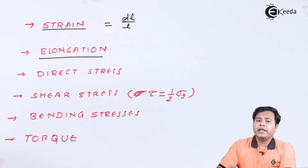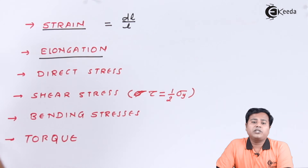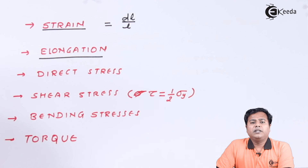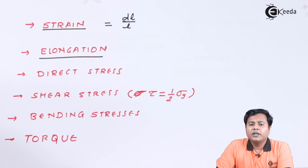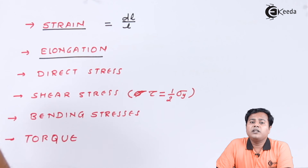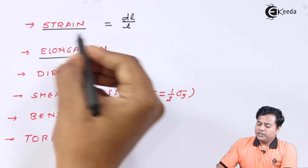The next parameter is elongation, which is the change in length after application of load. For a certain product, if they specify the allowable length as only 102 mm while the original length is 100 mm, but after application of load it goes beyond 103 mm, it is not within range — its elongation is out of the allowed range. In that case, I will say the material is failing for its elongation.